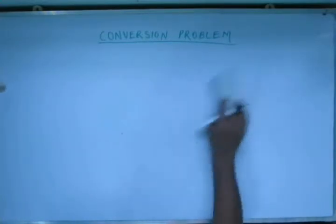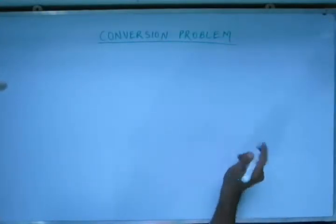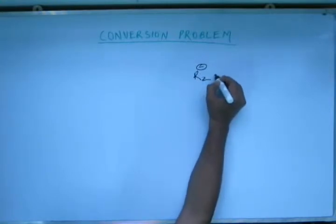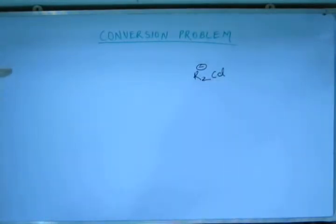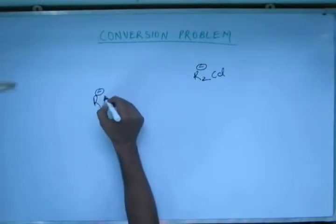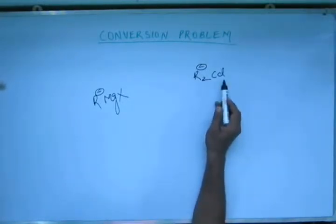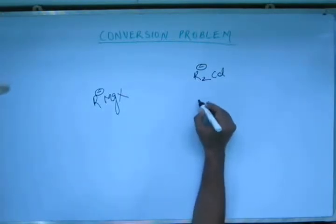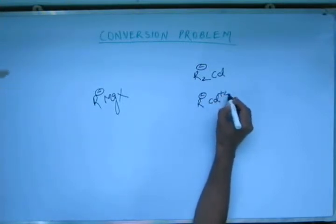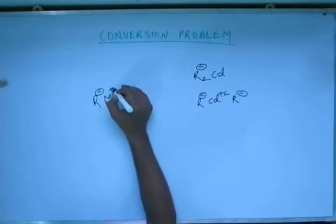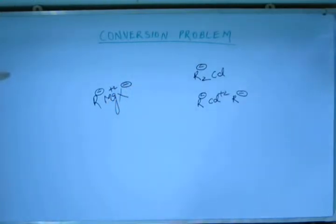At this point, I would like to introduce a reagent quite similar to Grignard reagent — dialkyl cadmium. In Grignard reagent we have RMgX, with a negative charge on R and magnesium as the central ion. In dialkyl cadmium, we also have a negative charge on R, but the central metal ion is cadmium instead of magnesium. So chemically, both contain the reactive part R⁻, but the difference in reactivity is significant.